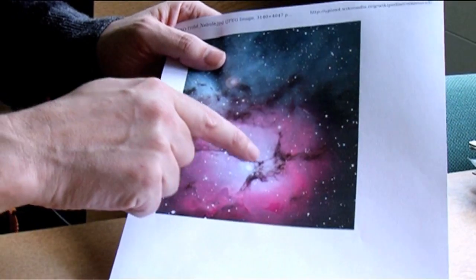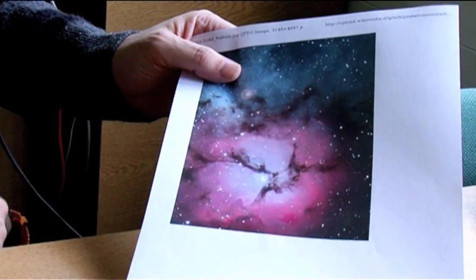Its popular name is called the Trifid Nebula, not named after the strange man-eating plants from the book of the same name, but actually because it has this threefold symmetry to it, there's kind of three petals to it if you like.